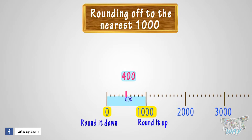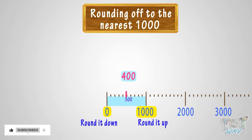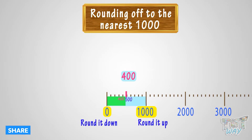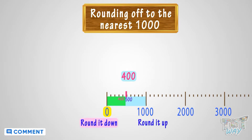Depending on whether the number is after or before the midway mark — and the midway mark between 1000s is 500 — 400 is below or before the 500 mark. So we will round it down to 0. 400 rounds to 0.